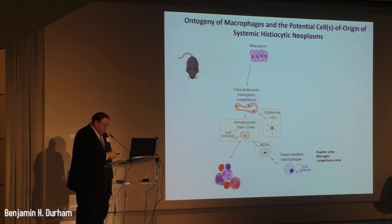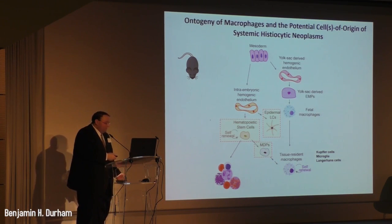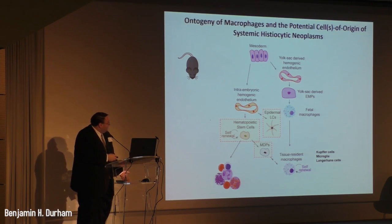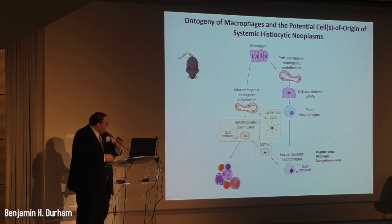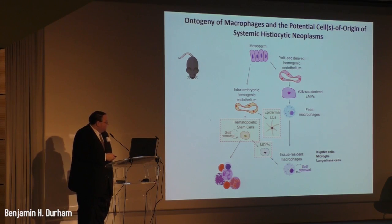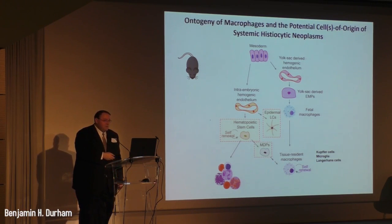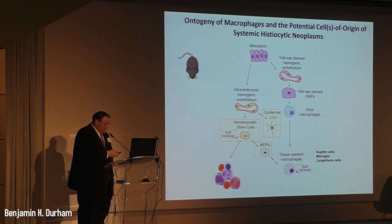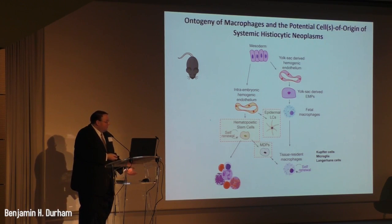Recent work from the Frederic Geissmann lab found another pathway in mouse that can lead to fetal tissue-resident macrophages through the yolk-sac-derived hemogenic endothelium. This can give rise to yolk-sac-derived erythro-myeloid progenitors, which can give rise to fetal liver macrophages and monocytes, and ultimately to tissue-resident macrophages independent of hematopoietic stem cells. So there are many options for cells of origin that we may find in mouse models as we work on systemic histiocytic neoplasms.